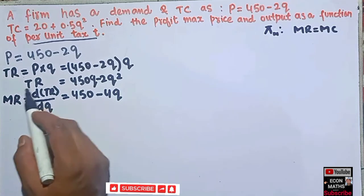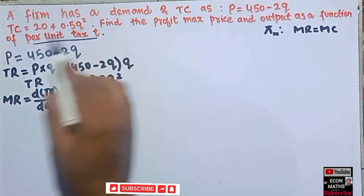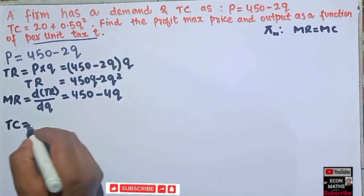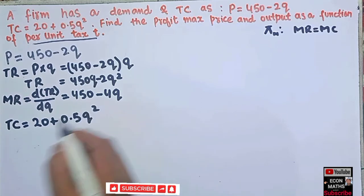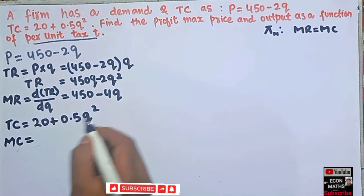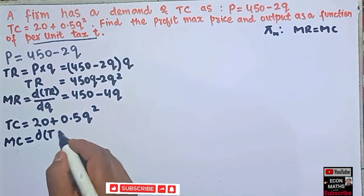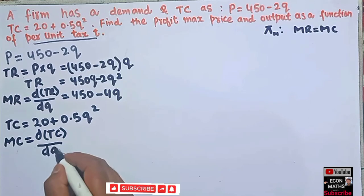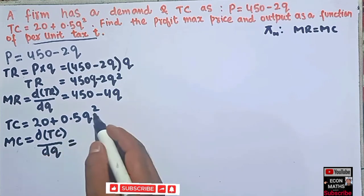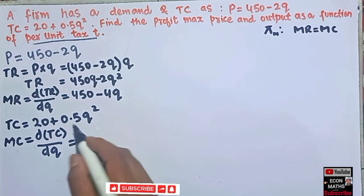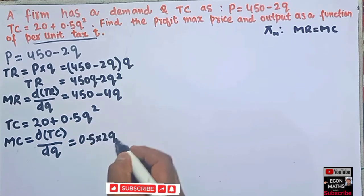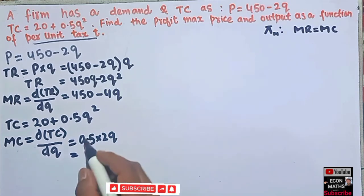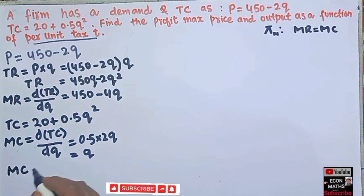Now we find marginal cost. Our total cost is given as TC = 20 plus 0.5q squared. Marginal cost is the derivative of total cost with respect to quantity. The derivative of the constant 20 is zero, and the derivative of 0.5q squared is 0.5 times 2q = q. So our marginal cost is MC = q.